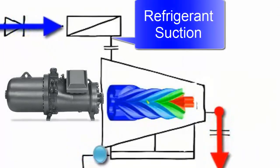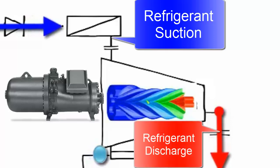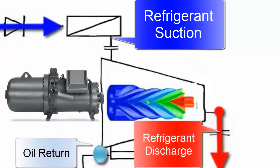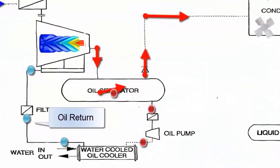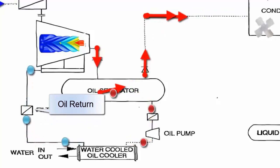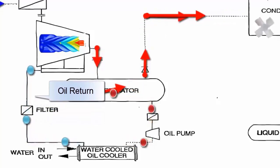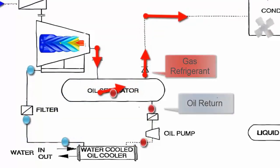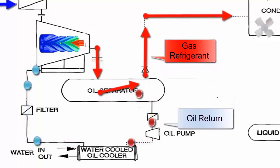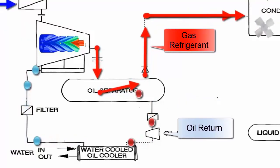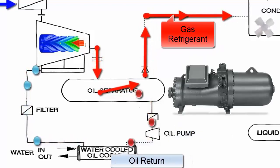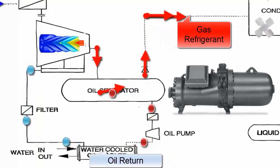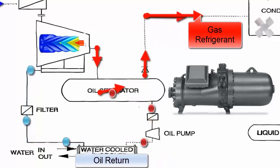Screw compressors are the most commonly used compressors for industrial refrigeration, in medium and high refrigeration capacity applications, due to their high efficiency. Screw compressors with oil injection have an almost isothermal compression process, as the heat generated by the compression process leaves the refrigerant and is absorbed by the oil. Given that oil is undesirable in other parts of the refrigeration system, oil flooded screw compressors bring with them the need for a strategy for proper lubricant management.